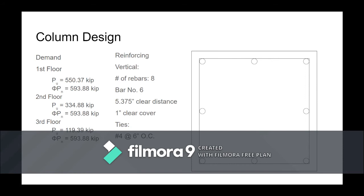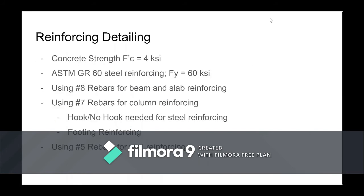Hi, I'm Tiffany Nguyen. To recap the materials: concrete strength is 4 ksi, steel reinforcing is Grade 60 with a yield strength of 60 ksi. We use number eight rebars for beam and slab reinforcing, number seven rebars for column reinforcing, and number five rebars for wall reinforcing. We use smaller rebars for wall reinforcing to maintain a good balance of concrete compressive strength and tension strength without over-reinforcing the structure.